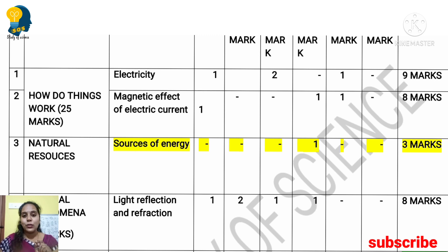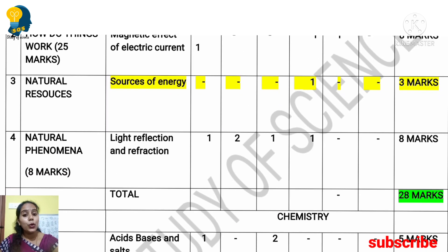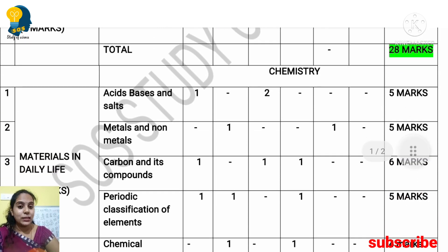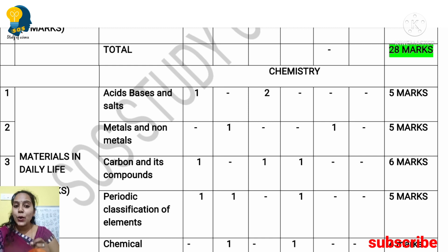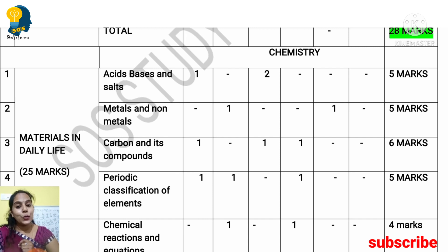Natural resources come under two themes. Materials in Daily Life is the second theme, and the lessons under it include Acids, Bases and Salts; Metals and Non-Metals; Carbon and Its Compounds; Periodic Classification of Elements; and Chemical Reactions and Equations. The total marks for chemistry under Materials in Daily Life is 25 marks.